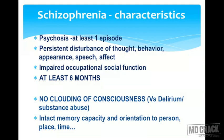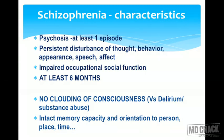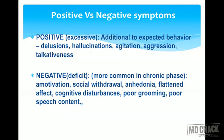The characteristics of schizophrenia include psychosis — at least one episode — persistent disturbance of thought, behavior, appearance, speech and affect, and impaired occupational and social functioning lasting at least six months. There is no clouding of consciousness as in delirium or substance abuse, and memory and orientation to person, place, and time are intact.